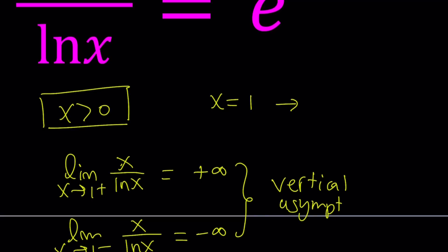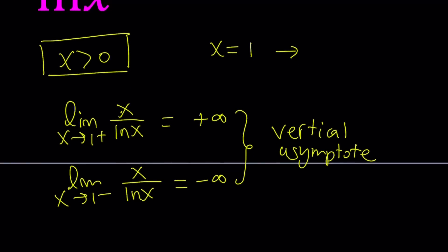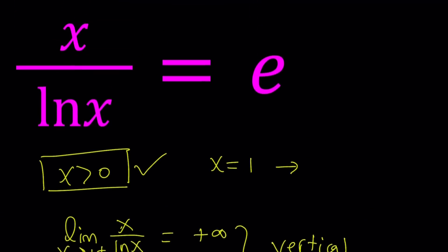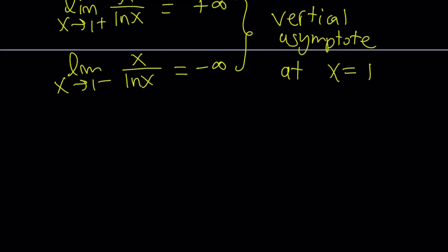So if the limit at a certain finite point is infinite, then you do have a vertical asymptote at that point — in this case, x equals 1. Now, we're going to take this into consideration, but we also said that x is greater than 0, which limits the domain of this function. Under these conditions, we're going to go ahead and differentiate this function and take a look at the first derivative and possible maxima and minima.